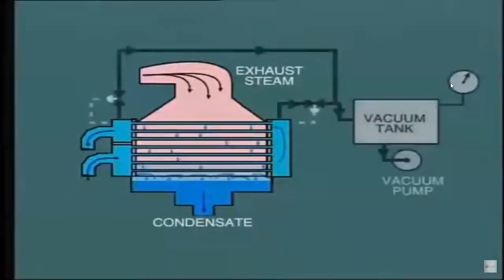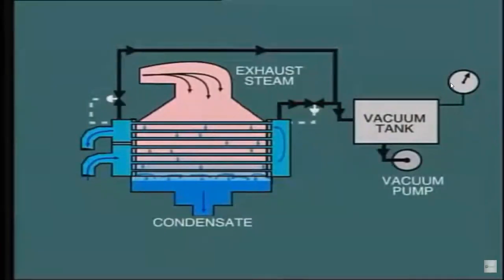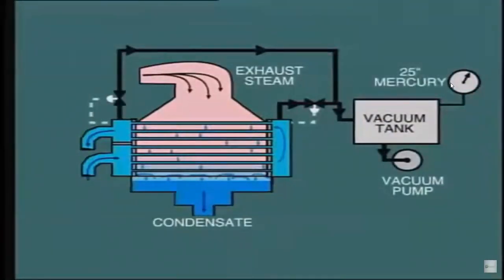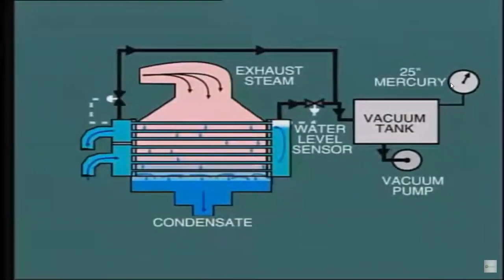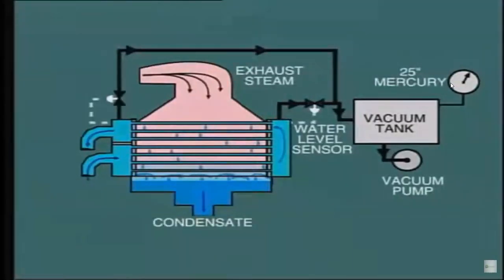The siphon connection prevents this from happening by drawing off the air at the top of the water box and piping it into a vacuum tank. The vacuum in the tank is maintained at about 25 inches of mercury by small vacuum pumps that are intermittently operated. A water level sensor in the water box operates a control valve on the siphon connection. When the level falls below a set level, the valve opens and air is drawn out, allowing the water level to rise. When the level raises to fill the water box, the control valve closes.